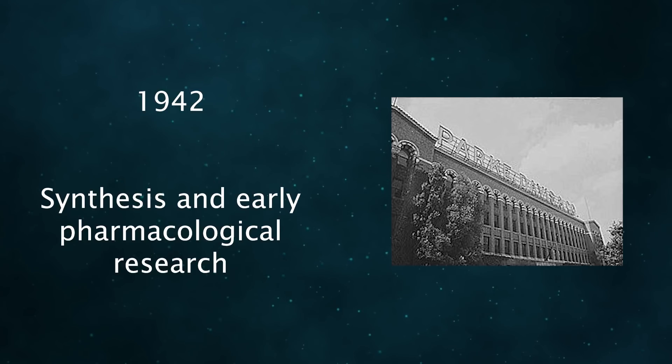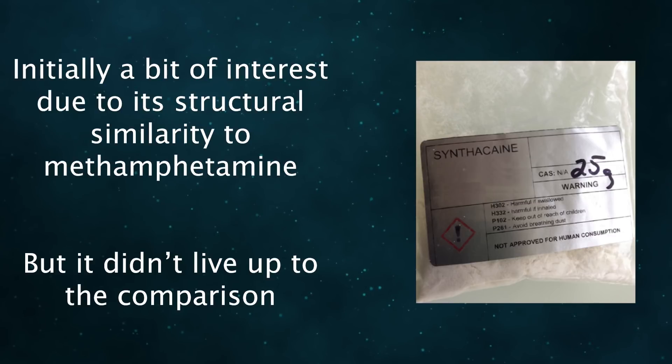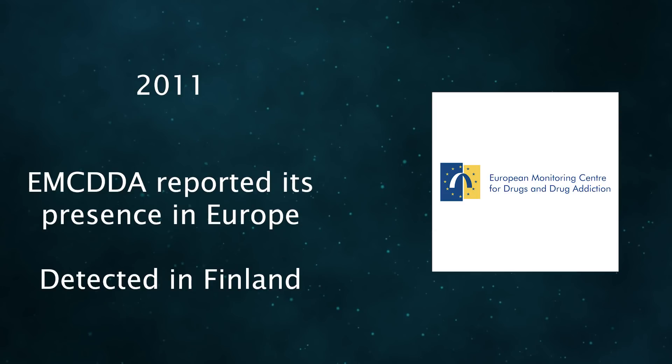MPA synthesis was first reported in 1942. It was synthesized at the University of Michigan, and early pharmacological research at Parke-Davis showed it had a notable effect on blood pressure, supporting its role as an adrenergic substance. It wasn't until 2010 that the drug appeared on the market, and experience reports started to show up. Initially, there was a lot of interest in MPA being a methamphetamine alternative due to its structural similarity, but it quickly became clear that it didn't have the same consistent recreational potential.